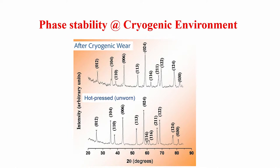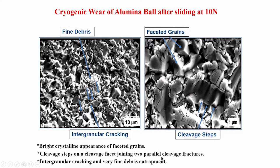As far as phase stability is concerned, the lower XRD pattern is from the unworn surface and the upper is from the cryogenic wear surface. There is not much difference in terms of the XRD patterns — these are all alpha-alumina and all characteristic peaks are present with similar intensity on both worn and unworn surfaces. Looking at the fascinating microstructures, you can see fine debris particles but more importantly there are signs of cleavage steps and faceted grains — these are representative of brittle fracture in materials like alumina.